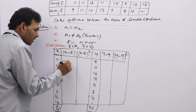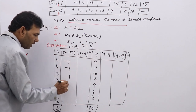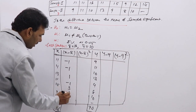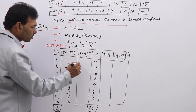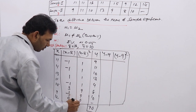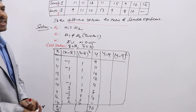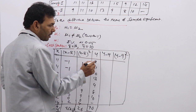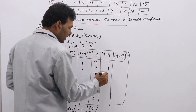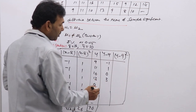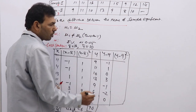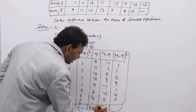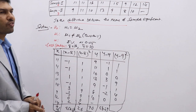Subtracting X-bar = 12 from each X value: 11−12=−1, 11−12=−1, 13−12=1, 11−12=−1, 15−12=3, 9−12=−3, 12−12=0, 14−12=2. Squaring: 1, 1, 1, 1, 9, 9, 0, 4. Summing gives Σ(X − X̄)² = 26. Similarly for Y (subtracting 10): deviations are −1, 1, 0, 3, −1, −2, 0; squared: 1, 1, 0, 9, 1, 4, 0. Σ(Y − Ȳ)² = 16.